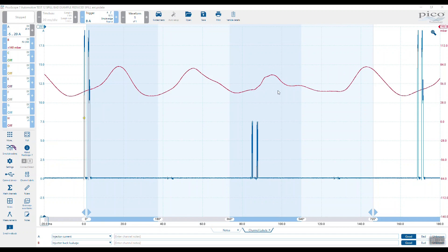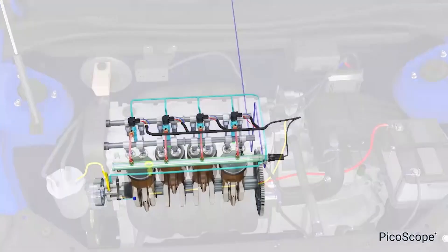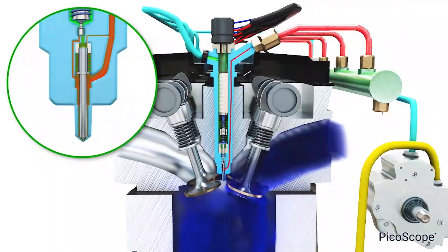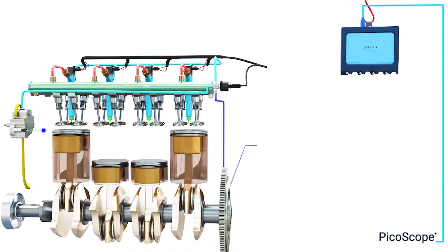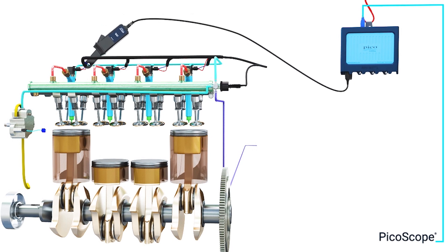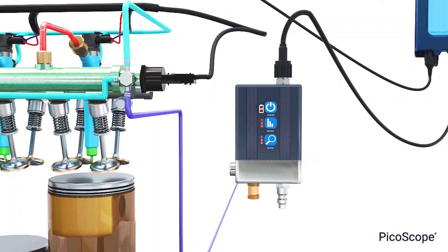Cylinder four is not contributing to back leakage as the remaining injectors and cylinders are. So whilst we had the vehicle running on four cylinders, this is actually an early warning that we could have an anomaly with injector number four. Using the WPS pressure transducer to capture diesel back leakage allows for a unique insight into the individual pressure pulsations generated after each injection event, and therefore we can qualify them across different engine speeds.